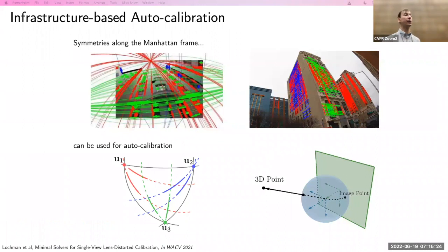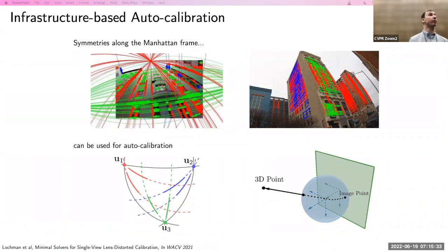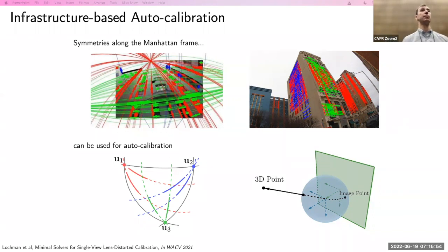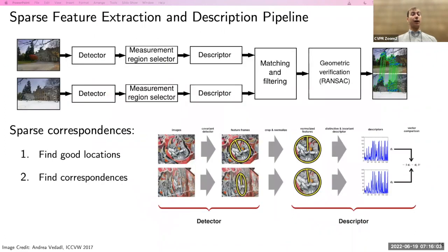We can do auto-calibration from a single image, assuming a Manhattan frame — three orthogonal planes — which holds in many cases for buildings. Going from affine correspondences to vanishing point detection, and then from vanishing points we can auto-calibrate the camera: estimating rotation, lens distortion parameters, and other parameters we want when trying to auto-calibrate an image.